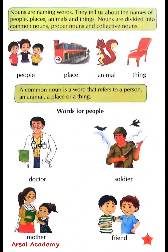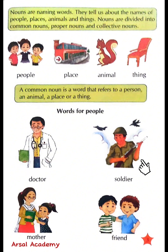A common noun is a word that refers to a person, an animal, a place, or a thing. Words for people: Doctor, Mother, Soldier, Friend.